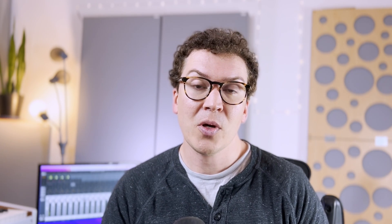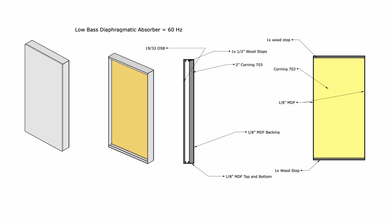You can add glass fiber inside the box, just making sure it doesn't touch the front panel, which needs to vibrate freely. That will increase the absorption of your box and also increase the Q — the range of frequencies being absorbed. I recommend adding a Corning 703 two-inch fiberglass batt against the back of the panel, making sure it doesn't fall forward.